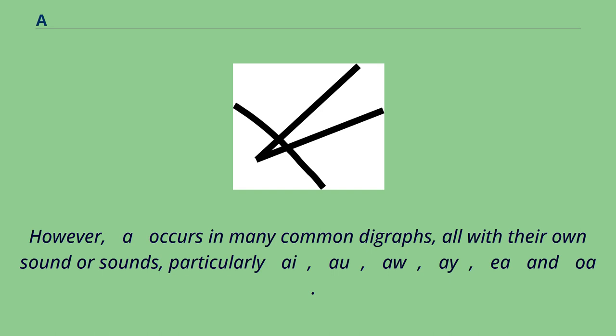However, A occurs in many common digraphs, all with their own sound or sounds, particularly AI, AO, AU, AW, and AY.